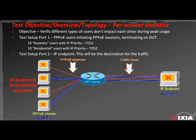Let's take a look at the test objective, the test overview, and the test topology that will be used to demonstrate ixNetwork's per session statistics feature. The objective of this test is to verify that different types of PPPoE users do not impact each other during peak usage time.